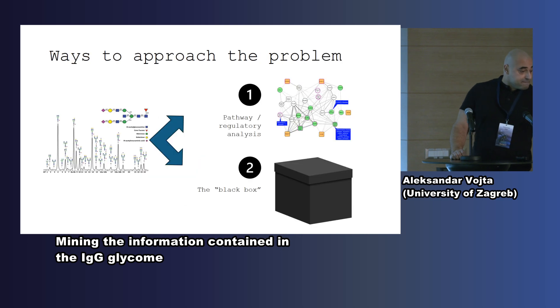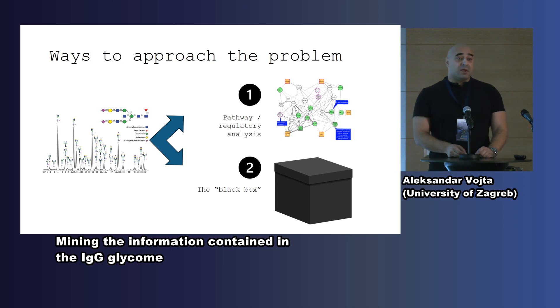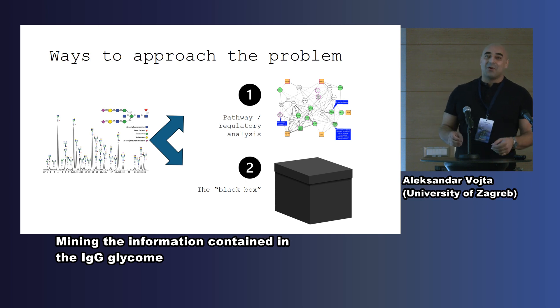When analyzing glycans, fundamentally, there are two main approaches. One is to painstakingly unravel this, what we call, intricate network of regulatory factors. And the other would be the black box approach. A black box would be some system that is, in itself, complex enough to capture this complexity and that can be trained.